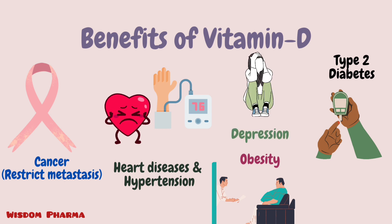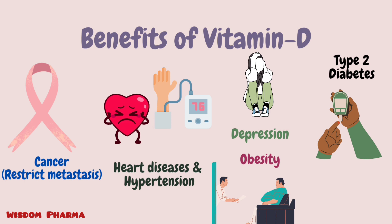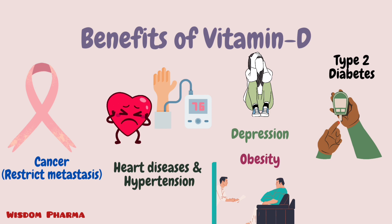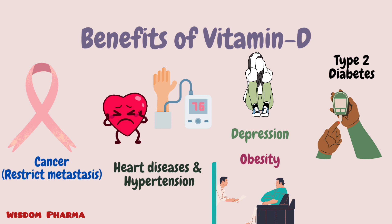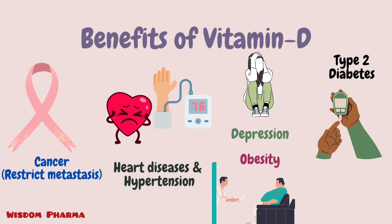Next is depression. When we have vitamin D in the normal range, it helps regulate serotonin — a chemical messenger in the brain. Maintaining normal vitamin D levels in our body can automatically increase the availability of serotonin in the brain, which helps reduce depression.